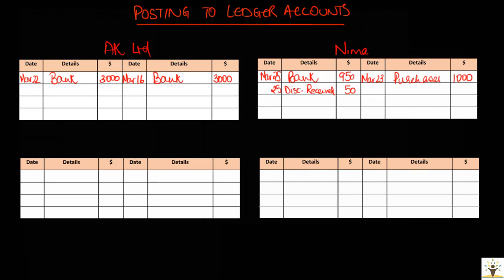In this way, you can prepare all other ledger accounts. Let us prepare the discount allowed account and discount received account. These accounts are not posted individually — instead, the totals taken in the cashbook for the discount allowed column and discount received column are directly posted at the end of the month. Discount allowed is an expense of the business and expenses are debited, so go to the debit side of discount allowed account and record the total for the month: $25. Discount received account is an income account, so it is recorded on the credit side: total discount received $50.